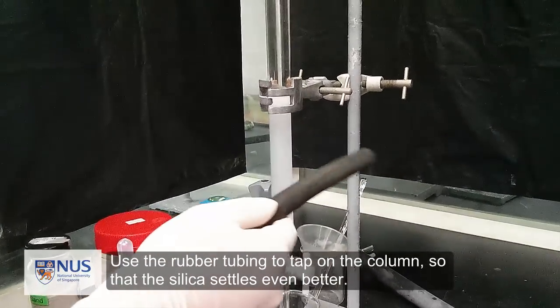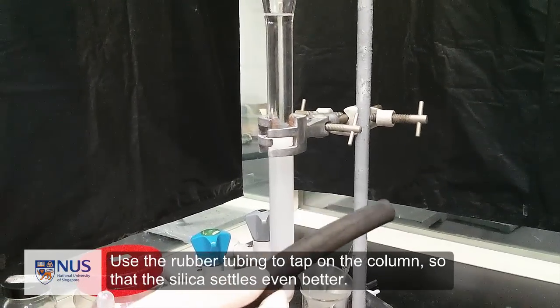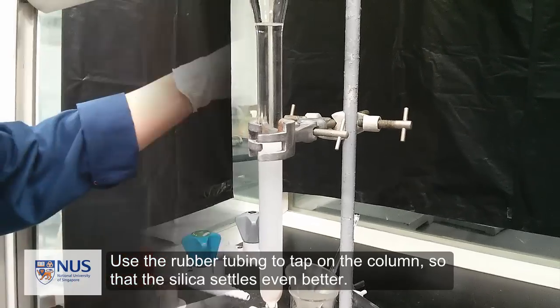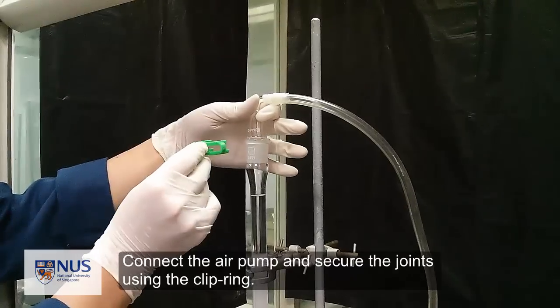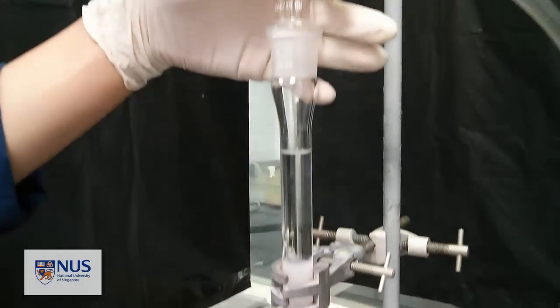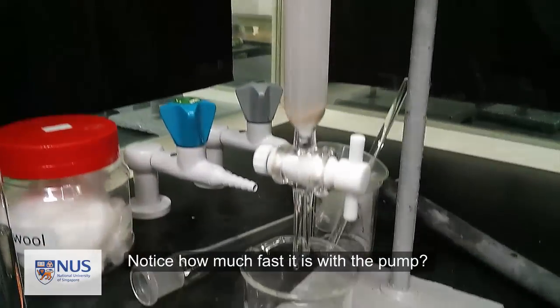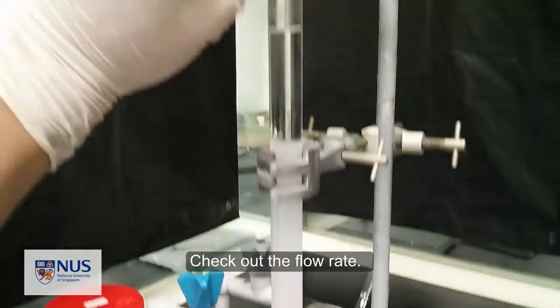Use the rubber tubing to tap on the column so that the silica settles even better. Connect the air pump and secure the joints using the clip ring. Check out the flow rate—it's much faster.